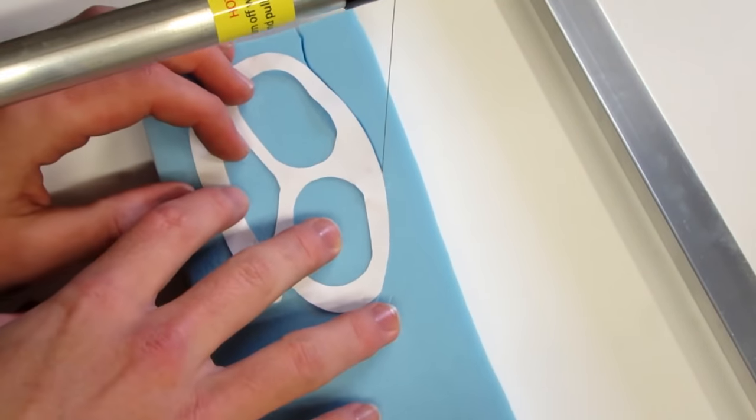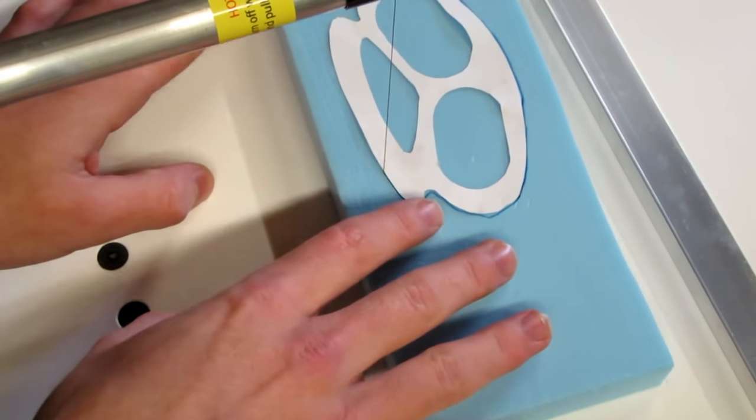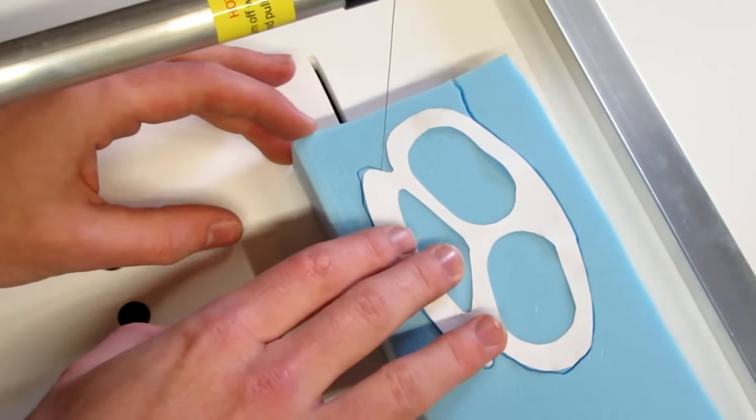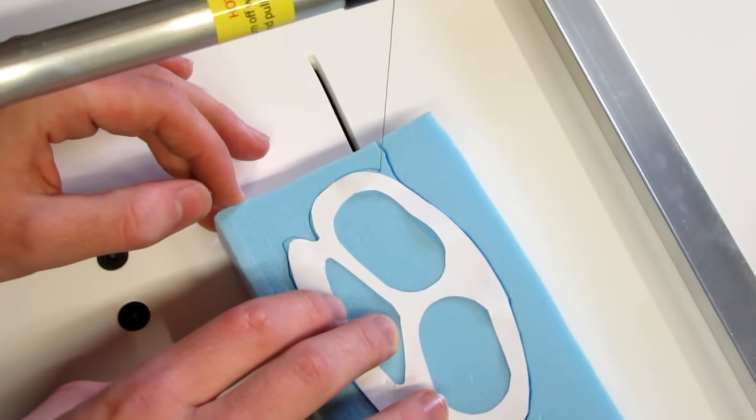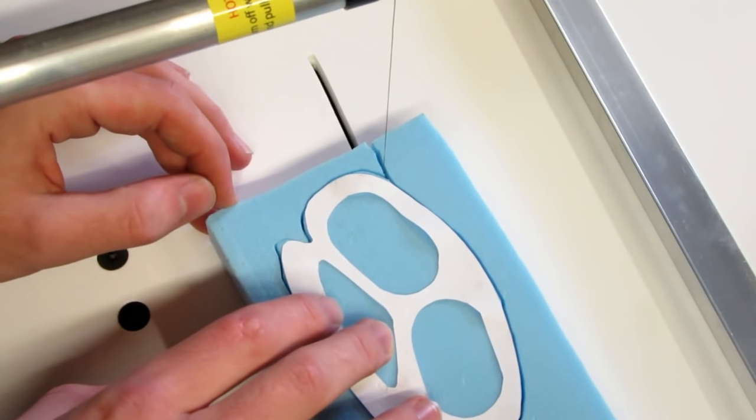I then use my styrofoam cutter to cut the outline. You may notice that it's not very tidy and this can be resolved by going over the areas you missed, or I found using a file will also work fine.